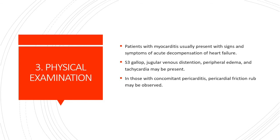When we come to the physical examination of such patients, a patient with myocarditis usually presents with signs and symptoms of acute decompensation of heart failure. On auscultation there will be an S3 gallop, jugular venous distension on general physical examination, peripheral edema, and tachycardia. In those with concomitant pericarditis, you may hear a pericardial friction rub.